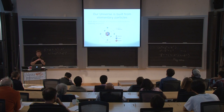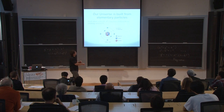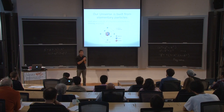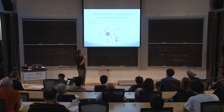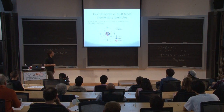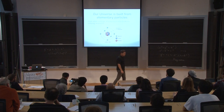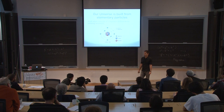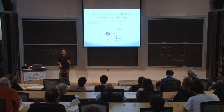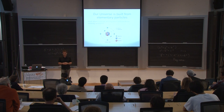We all know that all matter consists of atoms, and every atom has a nucleus and electrons orbiting around it. The nucleus consists of protons and neutrons. Here is a picture of the carbon atom: six protons, six neutrons, and six electrons. These three particles — electrons, protons, and neutrons — were long believed to be elementary and indivisible. It turns out that as far as we know, this is true only for electrons. Protons and neutrons can be further divided — they contain smaller constituents inside them.